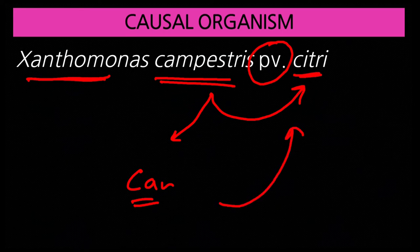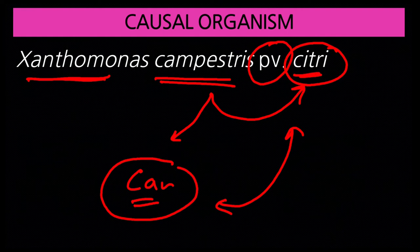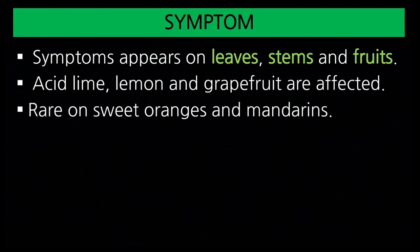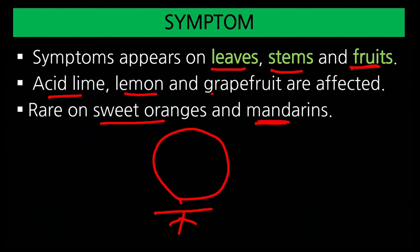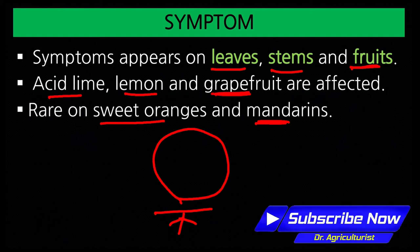Coming to symptoms: they appear on leaves, stems, and fruit. Acid lime, lemon, and grapefruits are commonly affected, while sweet orange and mandarin are rarely infected. The disease affects all aerial parts except the root. Acid lime, lemon, and grapefruits show more severe infection compared to sweet orange and mandarin.